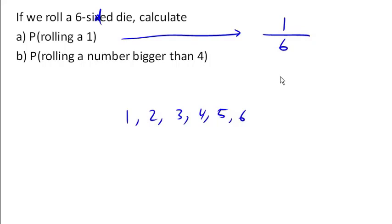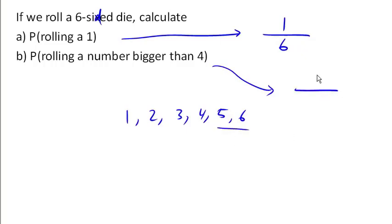You could also write that as a percent — it's about 17% — but we'll probably be using fractions most of the time because it's a little easier. Now how about the probability of rolling a number bigger than 4? There are two numbers bigger than 4, so there are two outcomes out of six total. We can reduce that fraction to 1/3 — a one-third probability of rolling a number bigger than 4.